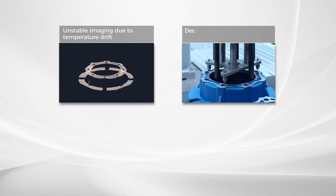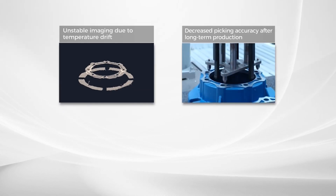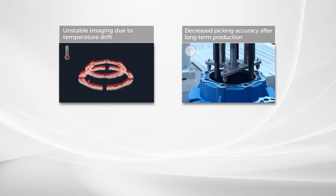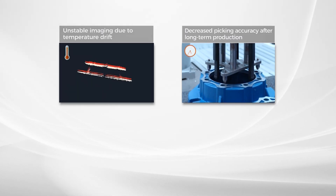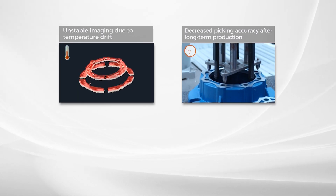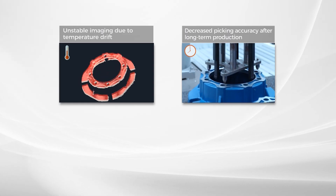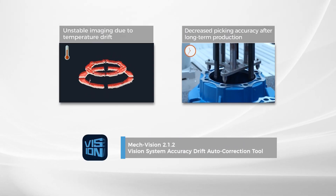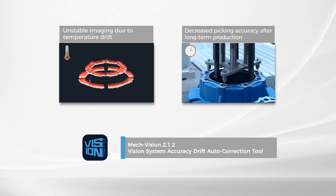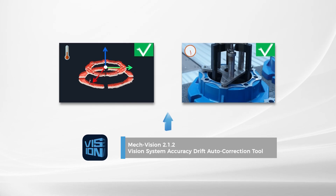Have you encountered these issues during 3D vision-guided robot production? To address accuracy drift caused by temperature changes and other external factors, MechMind launches the new Vision System Accuracy Drift Auto-Correction Tool to ensure production stability in harsh conditions.